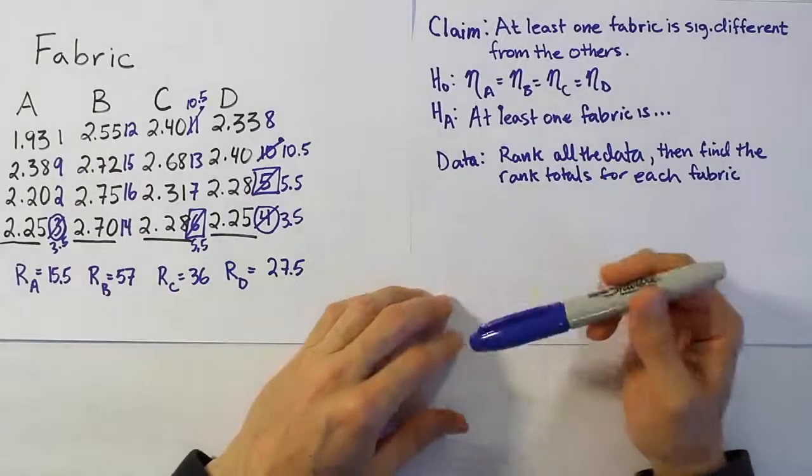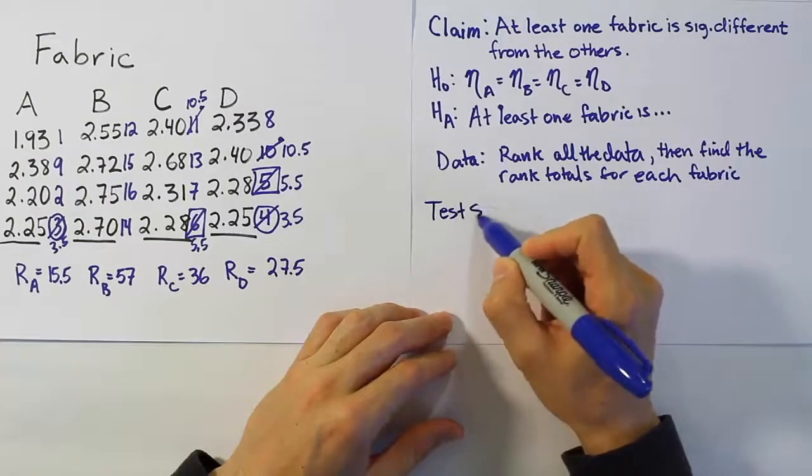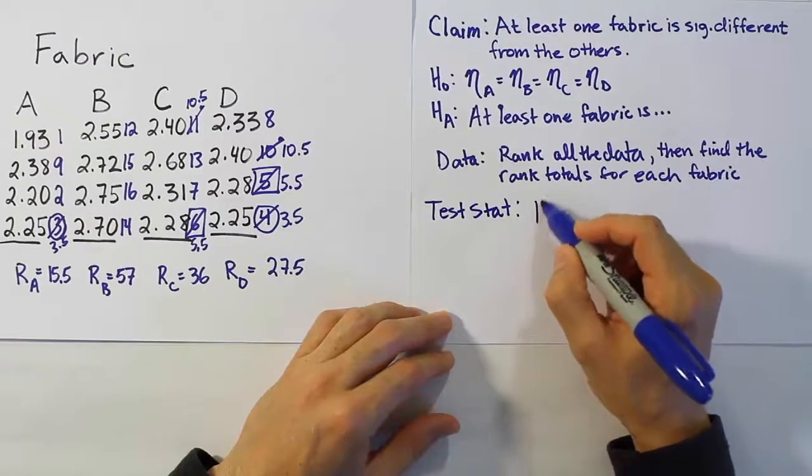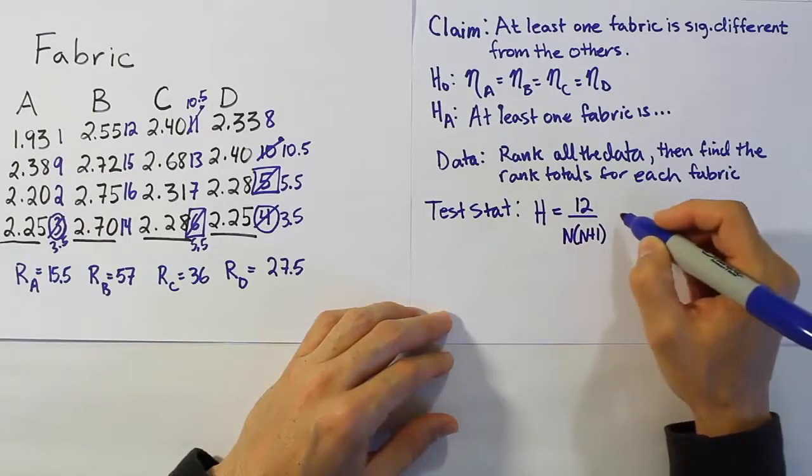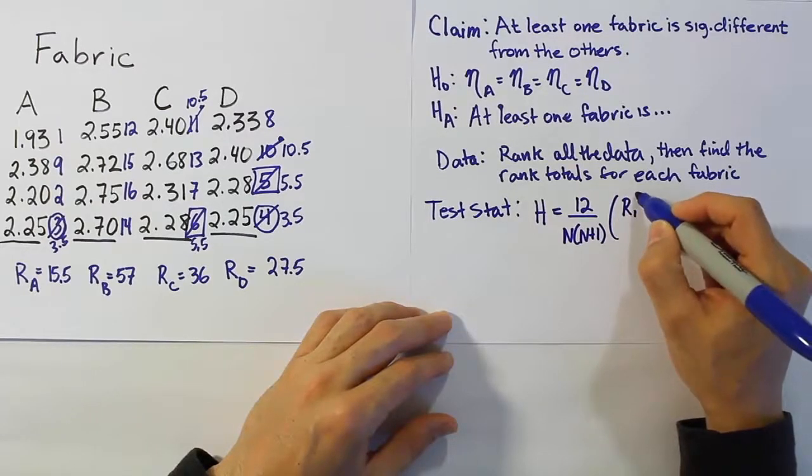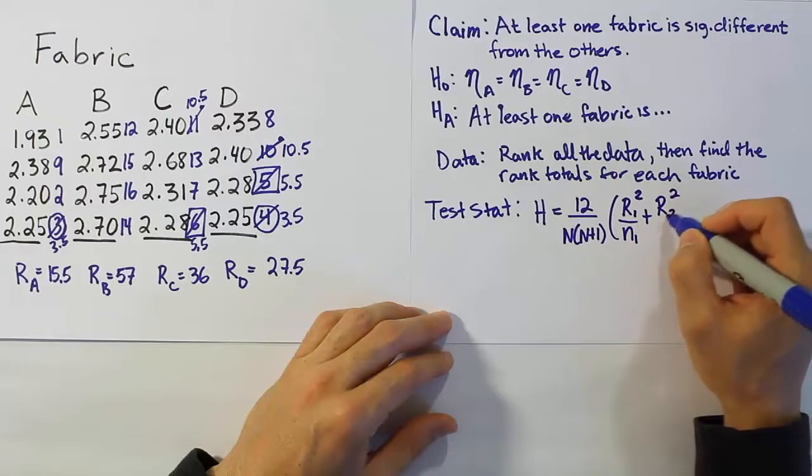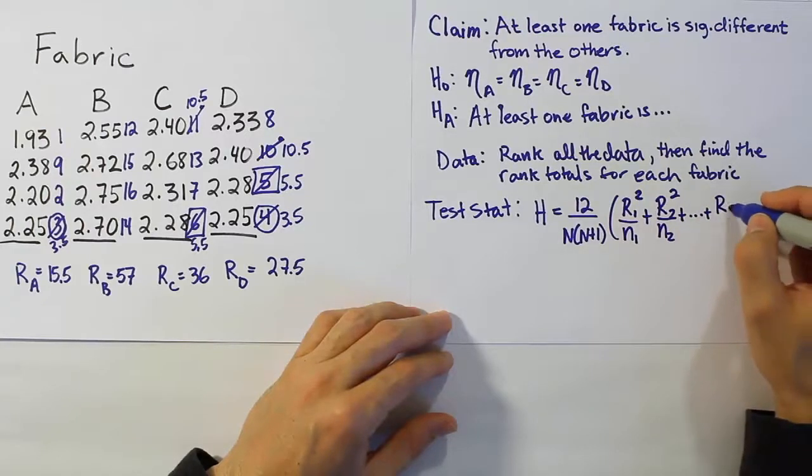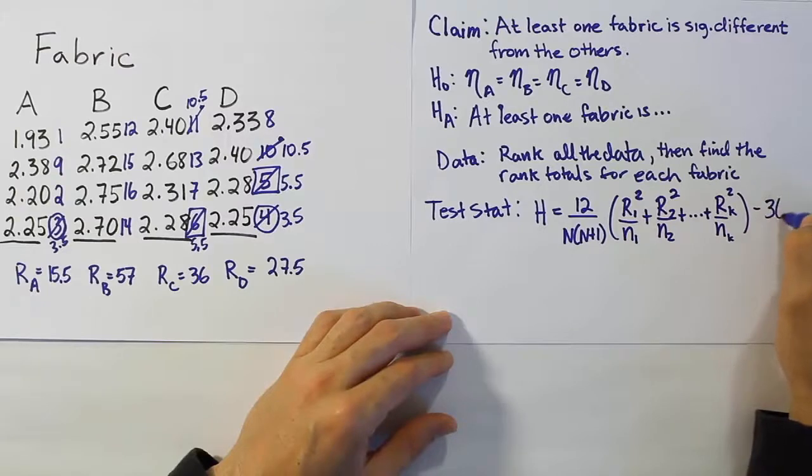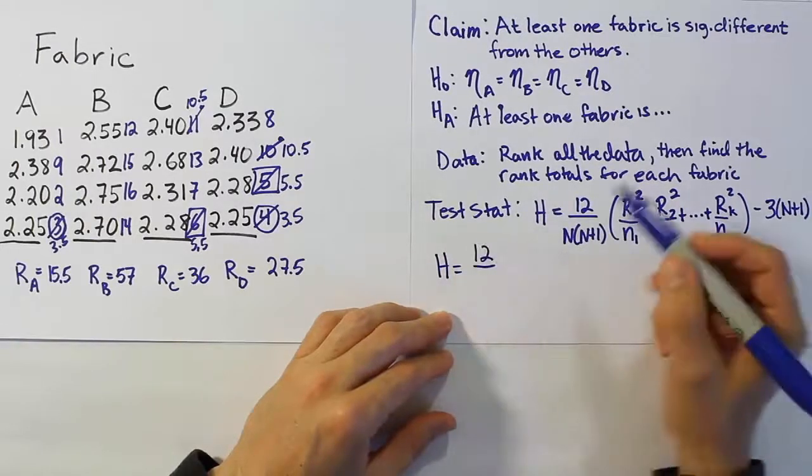Now, as usual, once we've manipulated the data and come up with things like our rank totals, we're ready to form the test statistic. The test stat in this problem is a little bit complicated, but it's just a formula, so you just plug in the numbers to it. Let's write down the formula. The formula has the symbol h for it, so it's h equals 12 over n times n plus 1 times the rank total for the first sample squared over n1, the number of values in the first sample, plus the rank total for the second sample squared over n2, the number of values in the second sample, plus dot dot dot, plus the rank total for the kth sample squared over n sub k, the number of values in the last sample. And then you subtract from that total 3 times n plus 1.